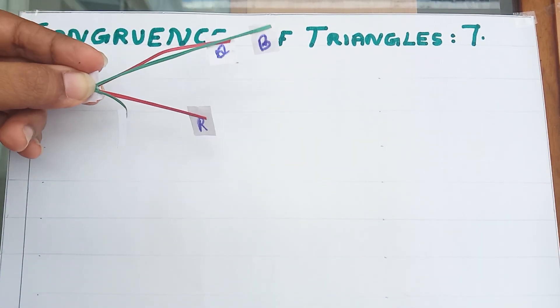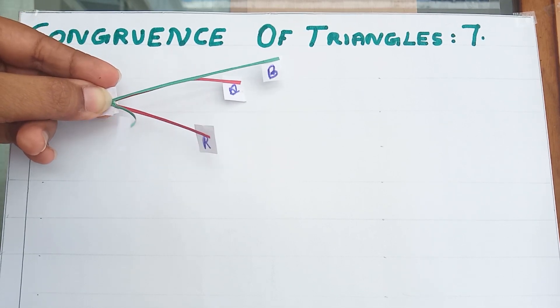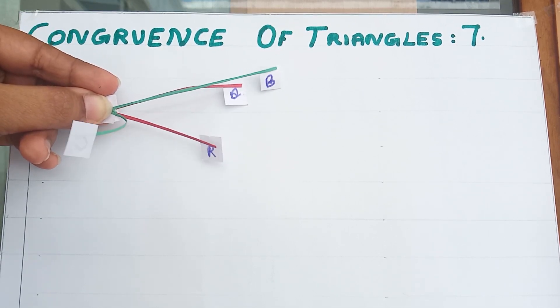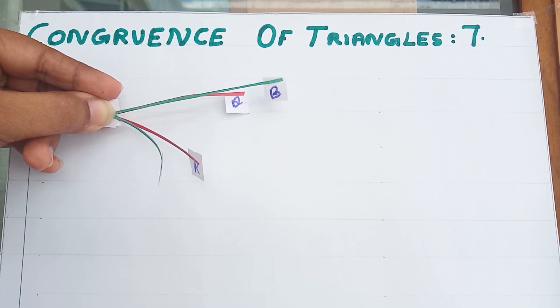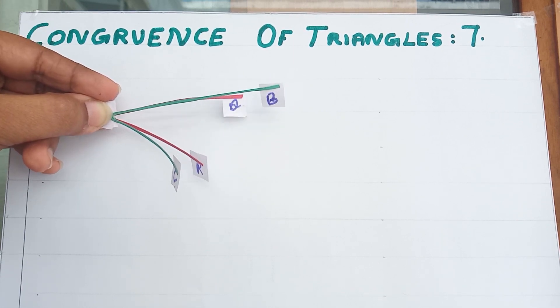And from this example we can say that the measure of both these angles are same. That means for getting congruency the measurement of angles should be equal.